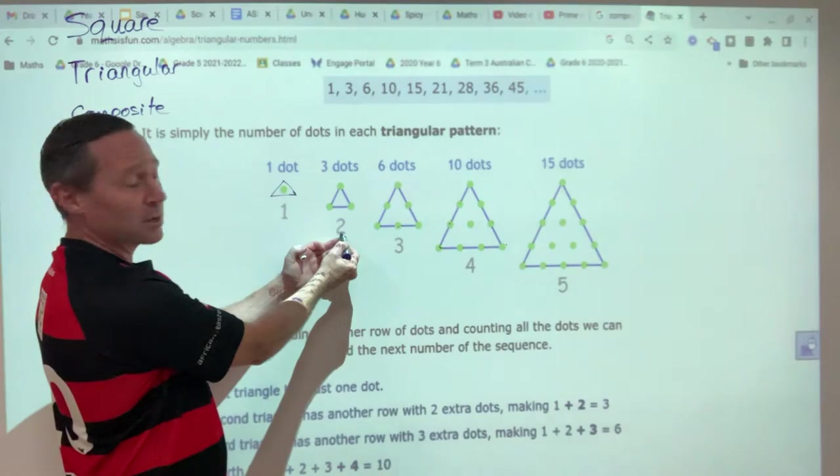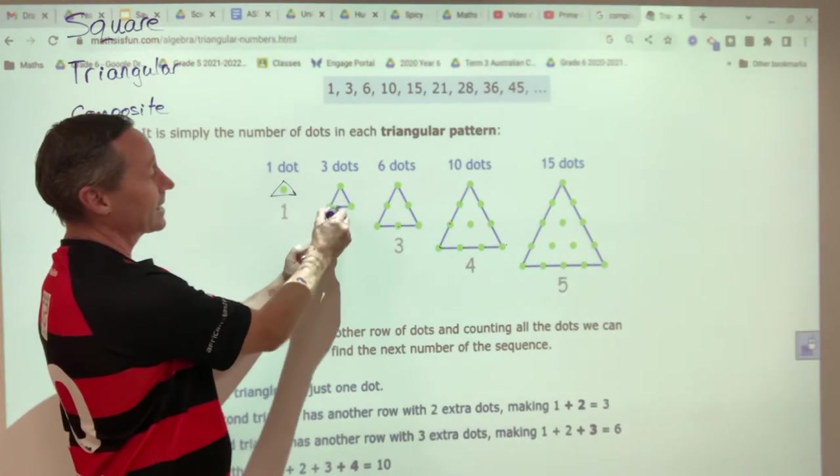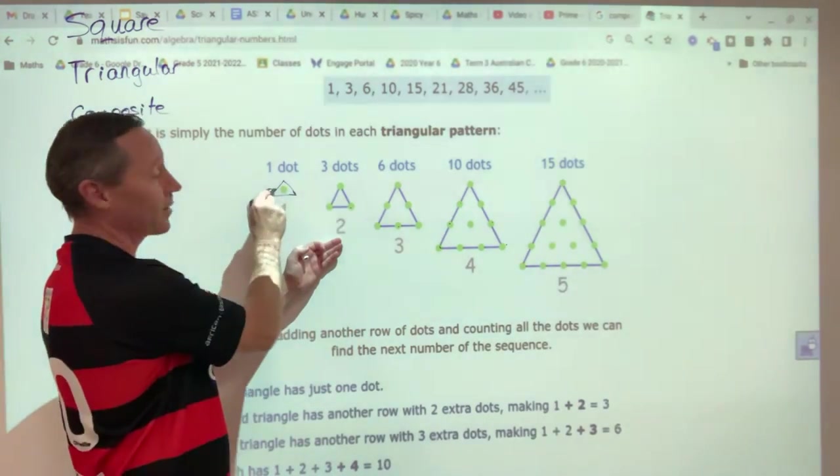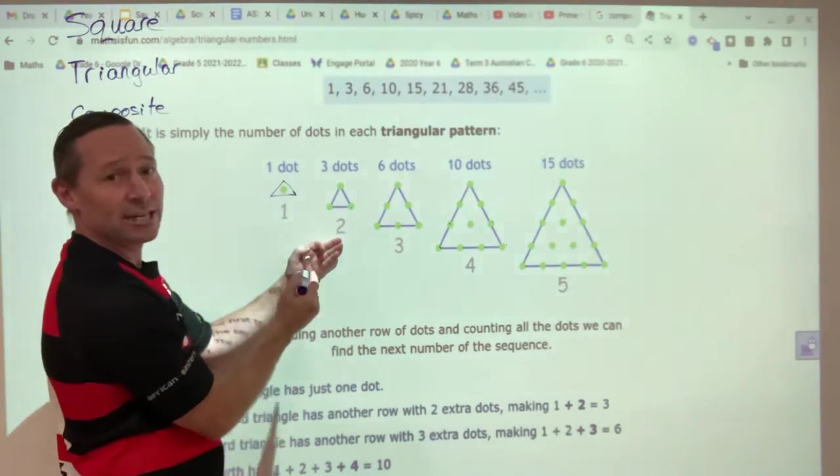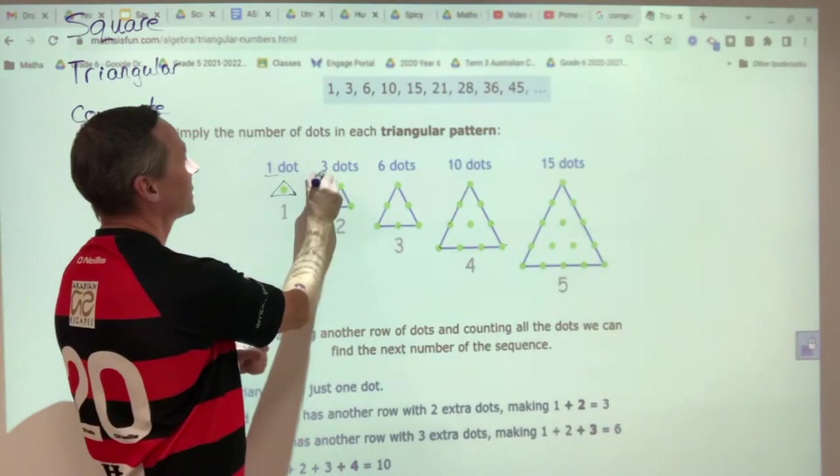The second triangular number, I'm adding two to the one I had before. So I now have a total of three. So my second triangular number is three.